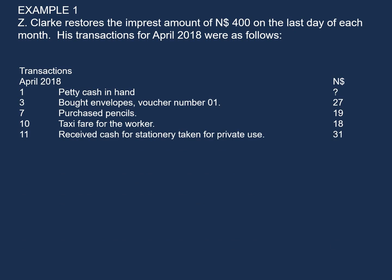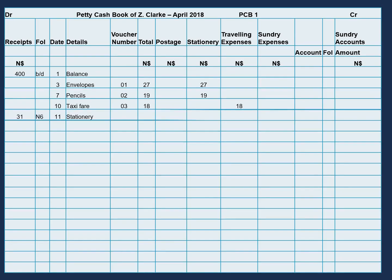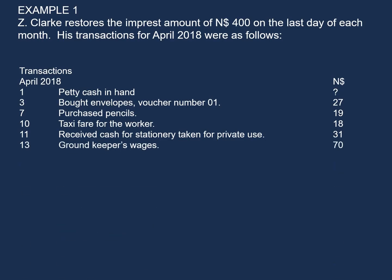Our next transaction is received cash for stationery taken for private use, $31. This should come on the debit side because we received the cash. So the $31 will come on our debit side in our receipts column. The description is stationery, the date was on the 11th, and in the folio column we will write N6.